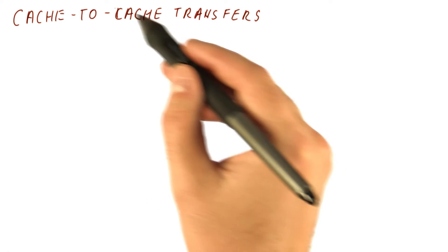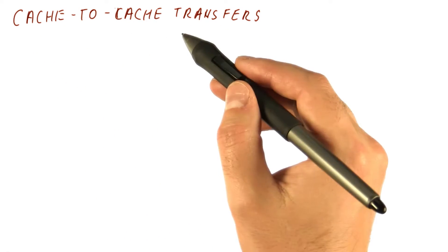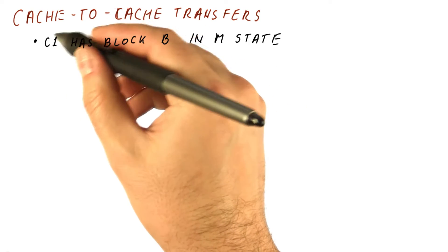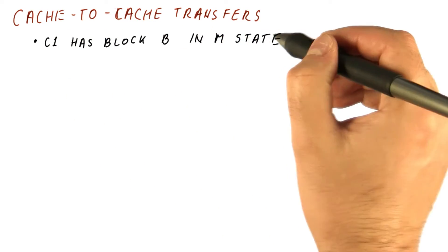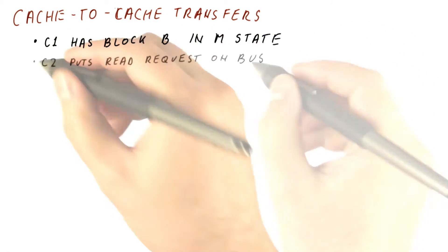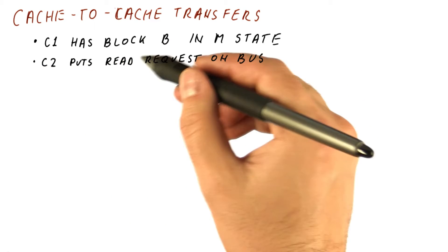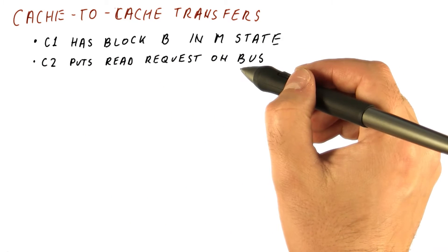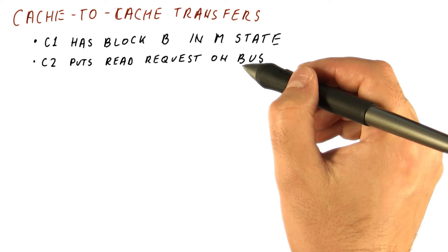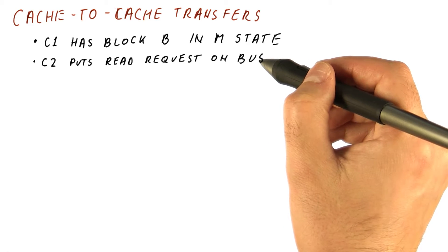So let's look more closely at what is called cache-to-cache transfers, which is what happens when core one has some block B in a modified state, and another core puts a read request on the bus so that it wants to basically bring the block in its own cache.